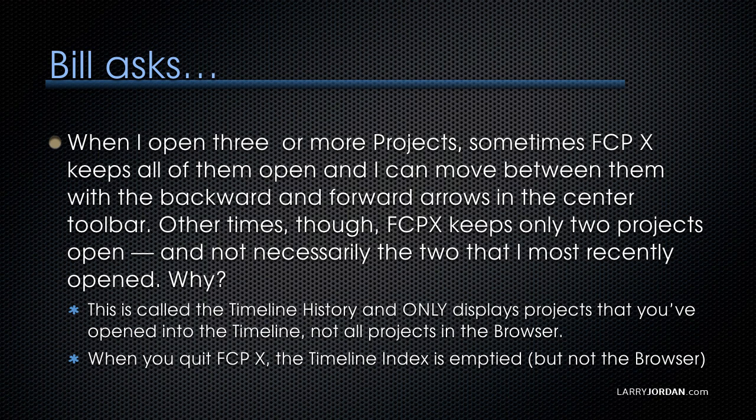Other times, though, Final Cut keeps only two projects open and not necessarily the two that I most recently opened. Why? These two arrows are called the timeline history. Apple made a big deal of this when Final Cut 10 first released, but it's since not been referred to very often in the help files. If you search for timeline history, you won't find anything. The timeline history only displays projects that you've opened into the timeline, not all projects that are in the browser. When you quit Final Cut, the timeline history is emptied.